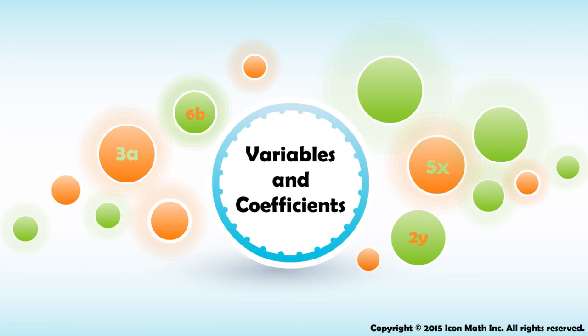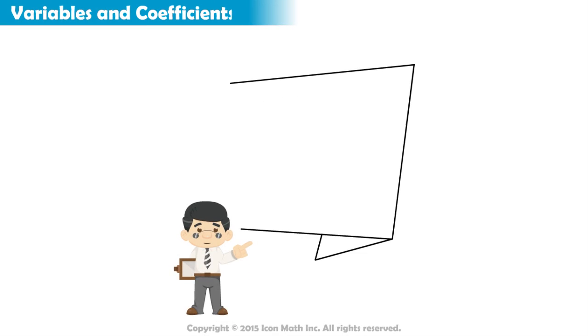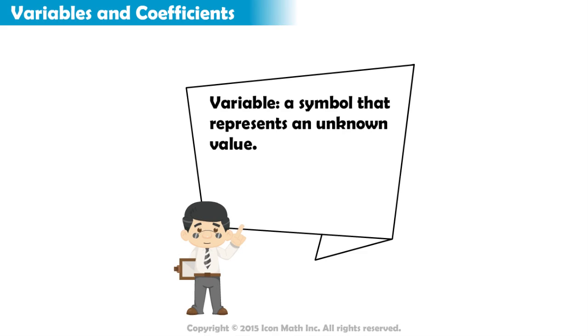Variables and Coefficients. A variable is a symbol that represents an unknown value. In mathematics, we usually represent variables with the letters x and y.